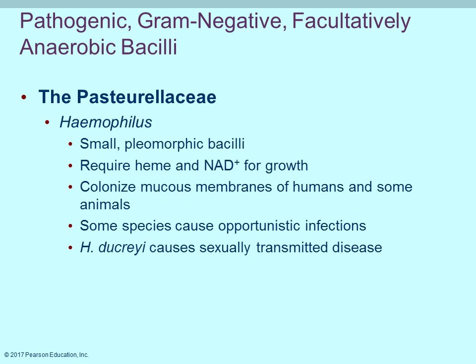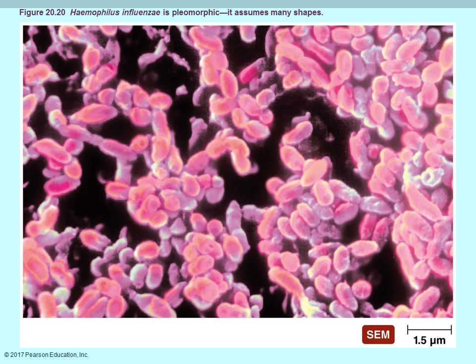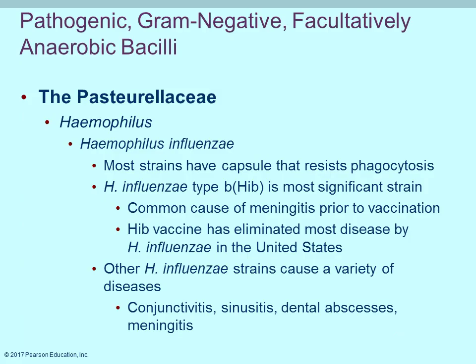Haemophilus is a very small pleomorphic bacillus that colonizes mucous membranes of humans and can be opportunistic. Haemophilus influenzae has a capsule that acts as a virulence factor resisting phagocytosis. Haemophilus influenzae type B, also known as Hib, is the most significant strain — it can cause meningitis. Due to vaccination programs, the number of cases has been greatly reduced.